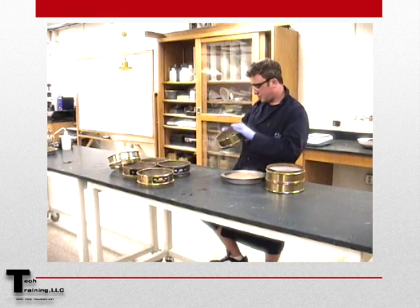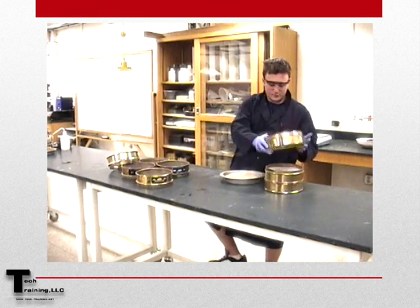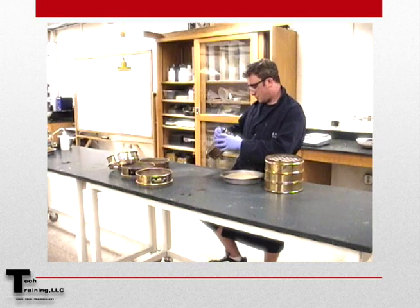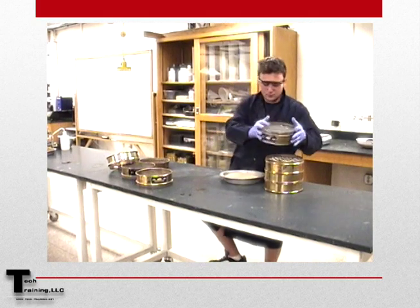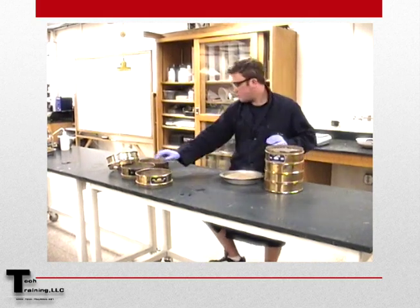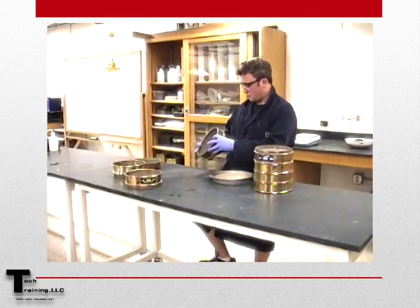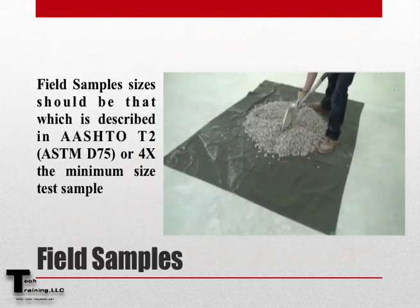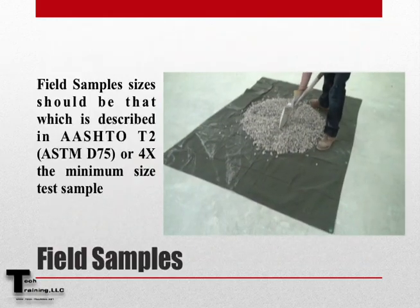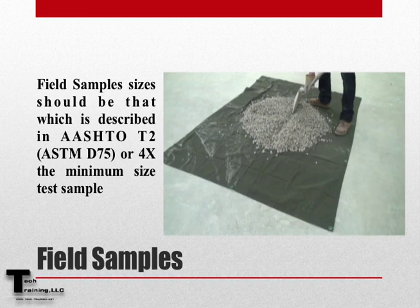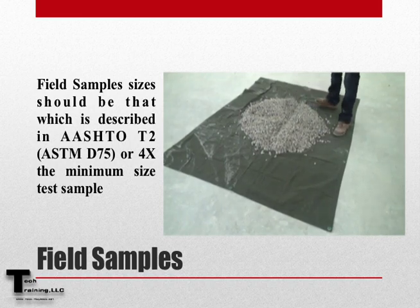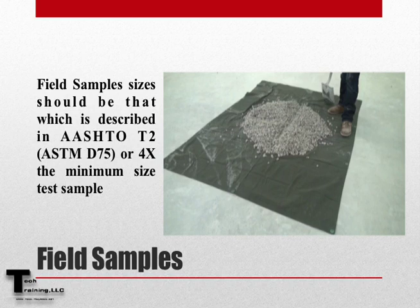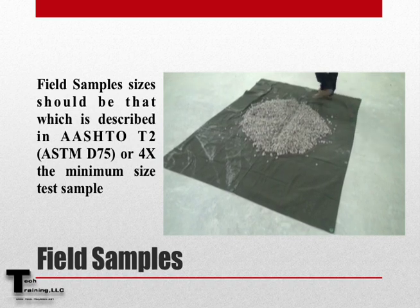In this procedure, a set of nested sieves with progressively smaller openings determine the size distribution of the aggregates sampled. The size of the field sample should be that which is shown in AASHTO T2, or 4 times that which is required, whichever is greater.